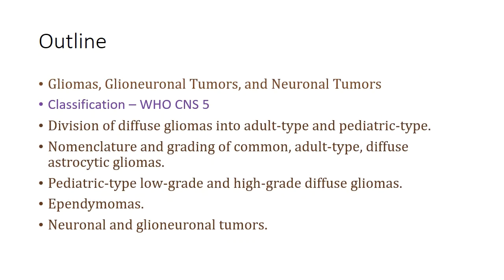Gliomas, Glioneuronal Tumors, and Neuronal Tumors will be discussed with specific emphasis on WHO CNS 5. Diffuse Gliomas, divided into adult type and pediatric types, will be discussed separately and in detail. Nomenclature and grading of adult type diffuse astrocytomas will be covered, as will pediatric type low grade and high grade diffuse Gliomas, Ependymomas, Neuronal and Glioneuronal Tumors.